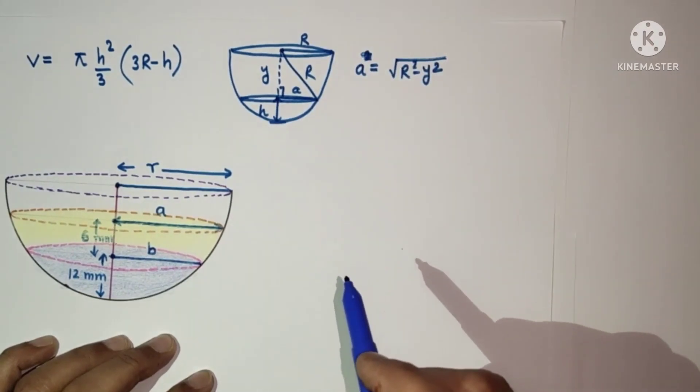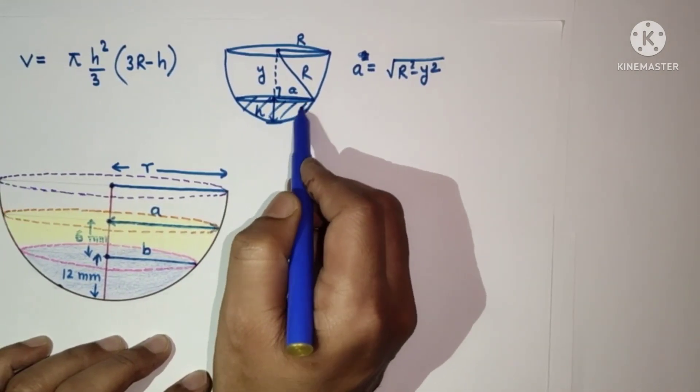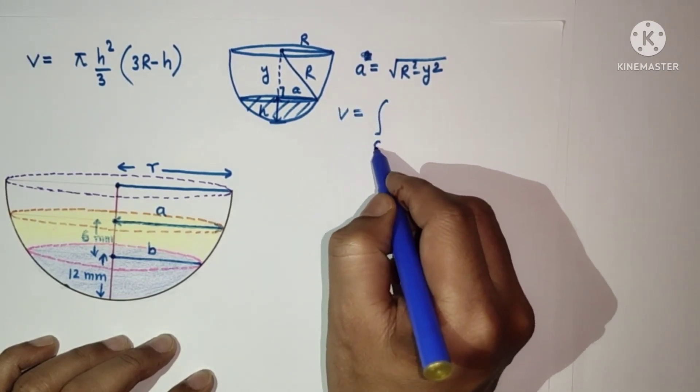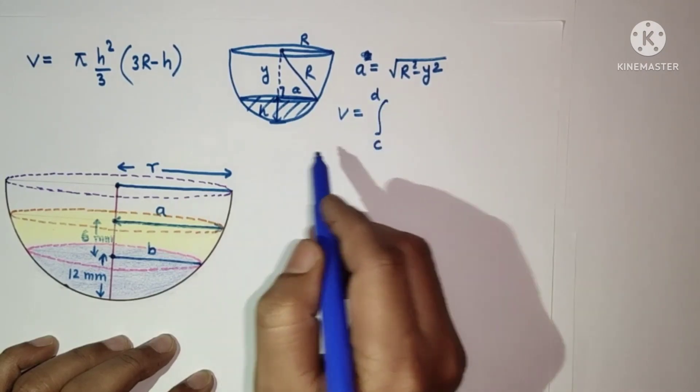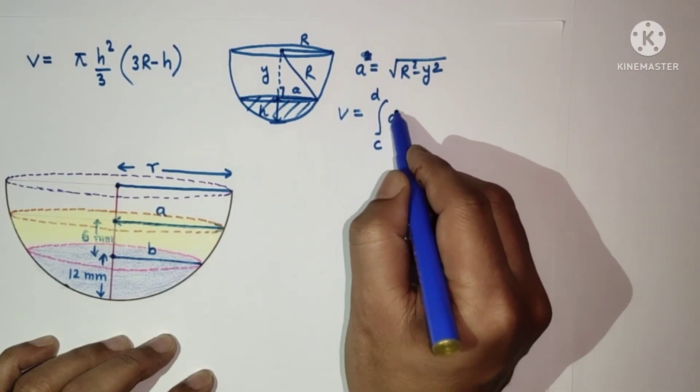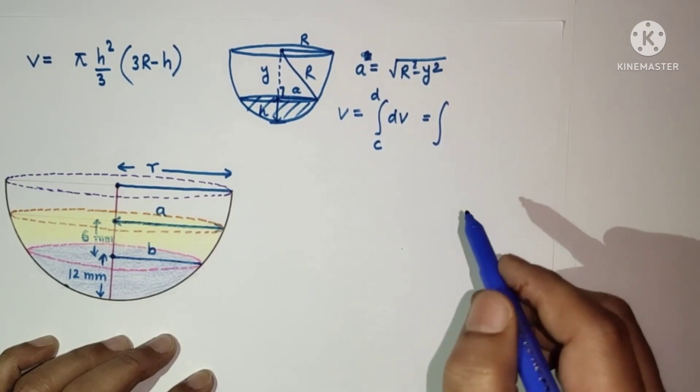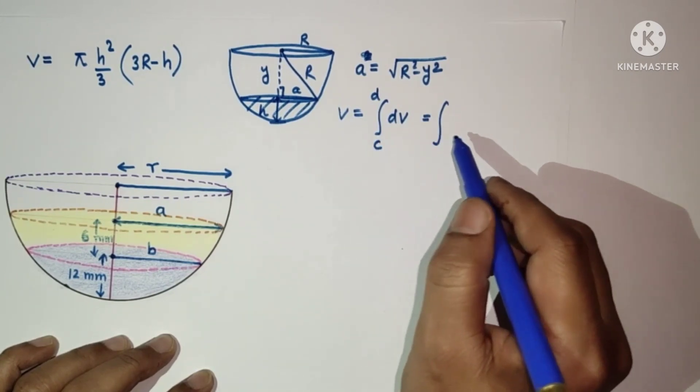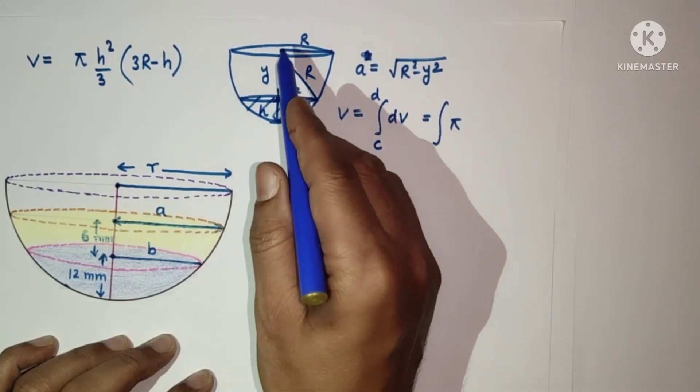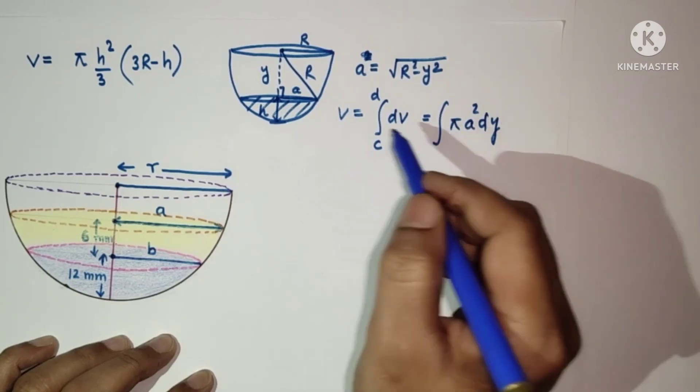To get the volume of this part, V equals the definite integral from C to D with the limits given from here to here. For dV, it will be pi A squared dY.